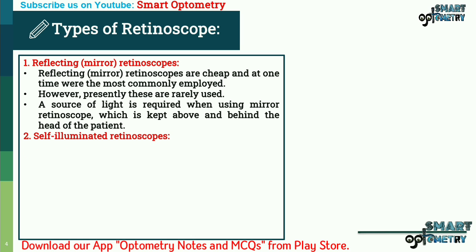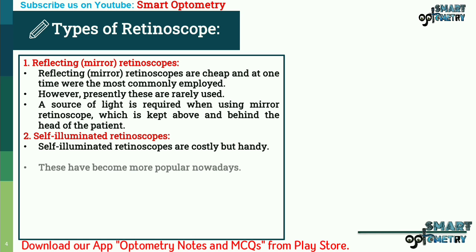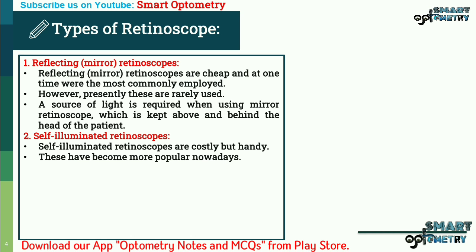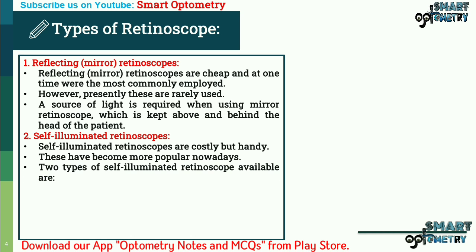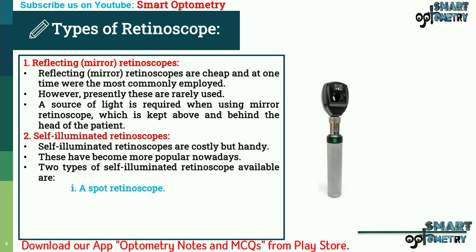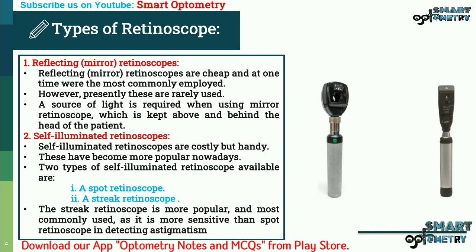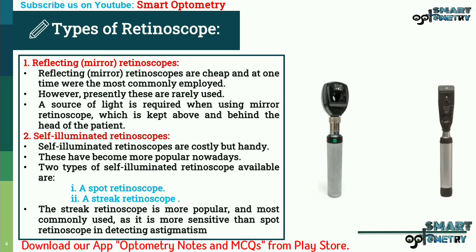The second type is the self-illuminated retinoscope, which is costly but handy and has become more popular nowadays. Two types of self-illuminated retinoscopes are available: the spot retinoscope and the streak retinoscope. The streak retinoscope is more popular and most commonly used, as it is more sensitive than the spot retinoscope in detecting astigmatism.